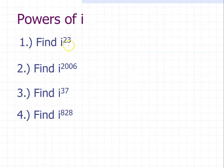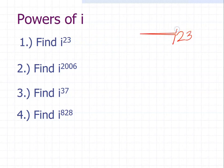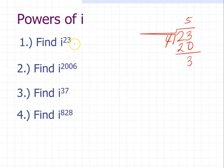Let's try some examples. Find i raised to the power of 23. We divide 23 by 4: 23 ÷ 4 = 5 remainder 3. So i to the power of 23 is equal to i to the power of 3, which equals negative i.